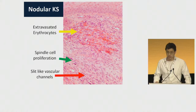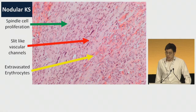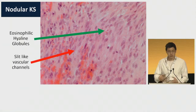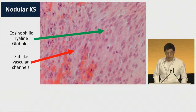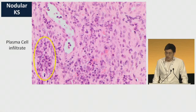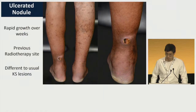Here we have the extravasated erythrocytes in yellow with a background spindle cell proliferation and slit-like vascular channels. On higher magnification, we can see these more clearly. There are also some eosinophilic hyaline globules, which are more specific features of Kaposi sarcoma, and you often get those in plaque and nodular stage KS, as well as a plasma cell infiltrate in other areas of the biopsy. HHV-8 staining confirmed our suspicion of Kaposi sarcoma.